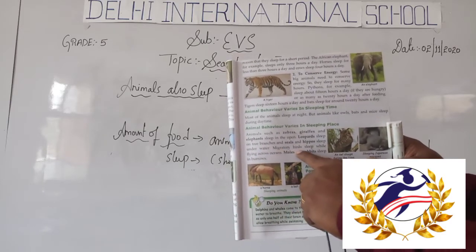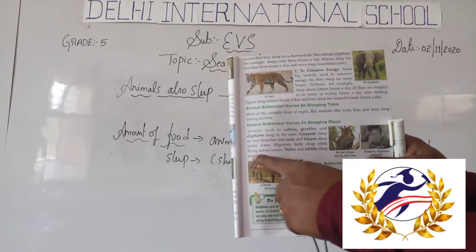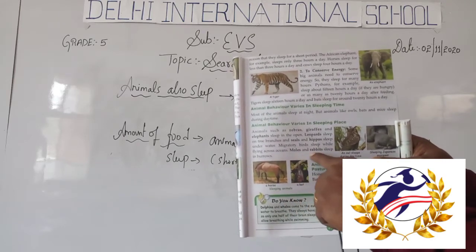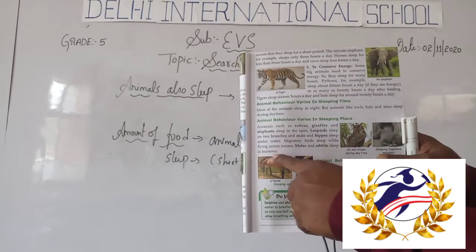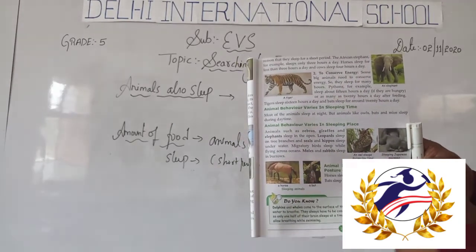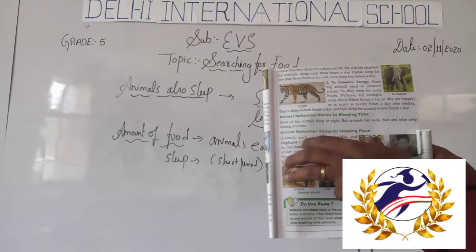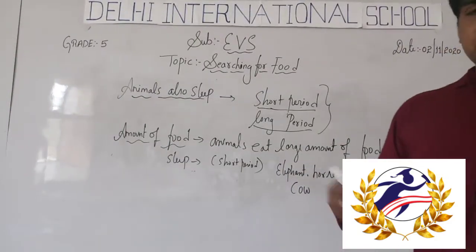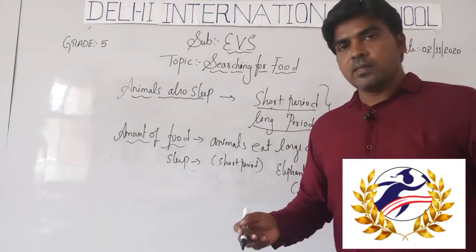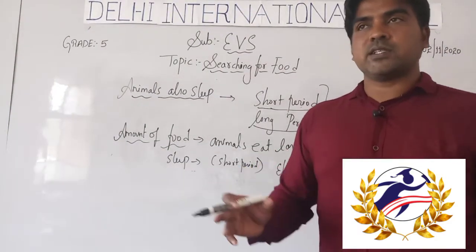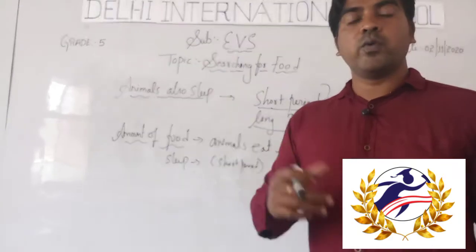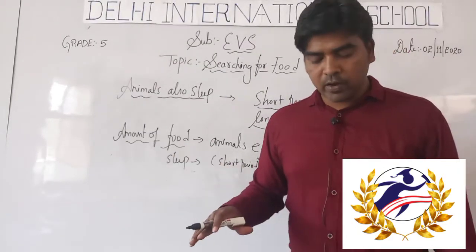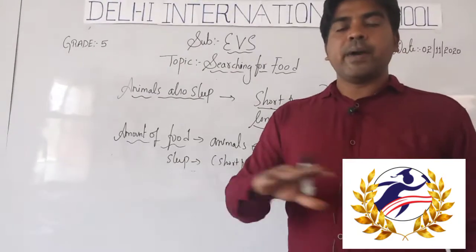Migratory birds sleep while flying across the ocean. Moles and rabbits sleep in burrows. Just like we choose to sleep on a bed or on a mat, animals also choose their own places to take rest.